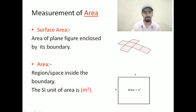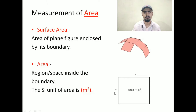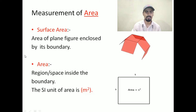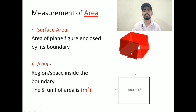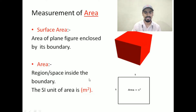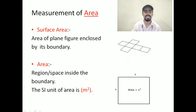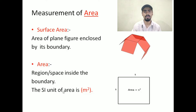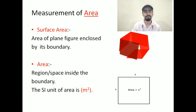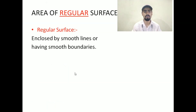Remember, when you are talking about area, you are only dealing with two-dimensional objects. When you are dealing with surface area, you are dealing with three-dimensional objects. That is the basic difference between area and surface area. And of course, the SI unit of area is meter square. I hope you are clear with this topic. Now let's begin with the next topic.